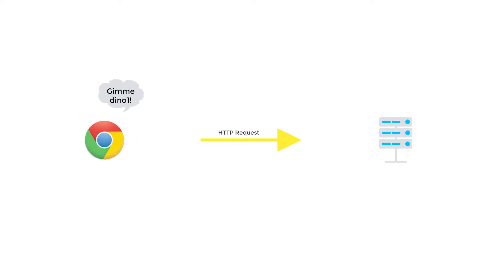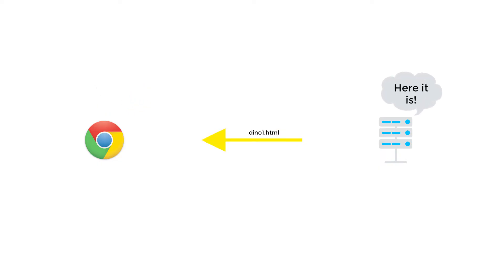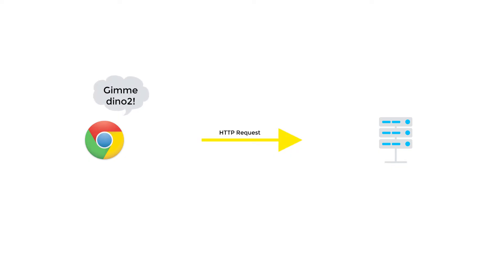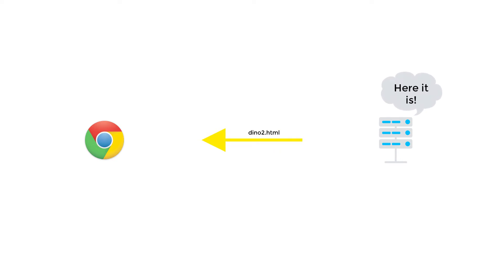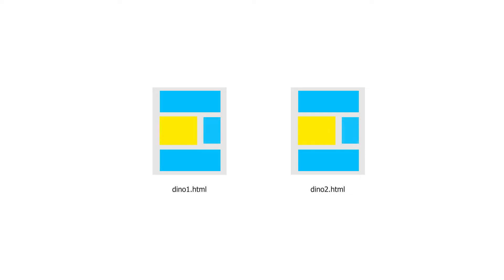Usually when you open a website and go from one of its pages to another, the typical scenario is that your browser makes a request to the server, and then the server sends back the page you're trying to access. That means every time you open a new page, the entire content of that page is loaded, including parts that are common between every page — such as the navigation menu, the footer, and maybe other common elements depending on the design of the website.